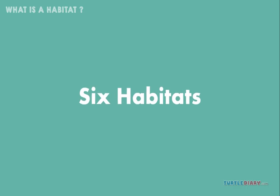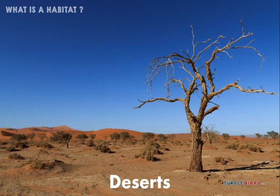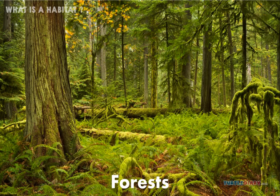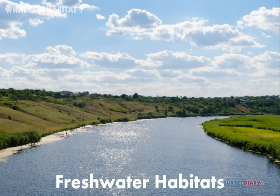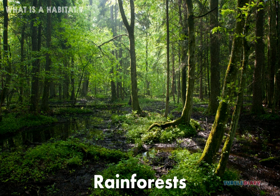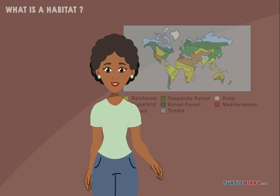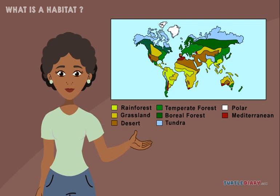There are six habitats: polar habitats, deserts, forests, freshwater habitats, ocean habitats, and rainforests. Habitats are found all over the world. See in this map where the different habitats are located.